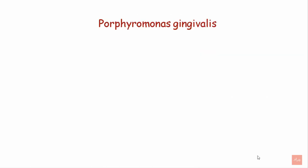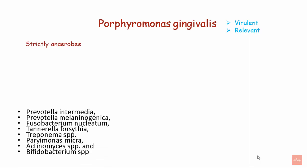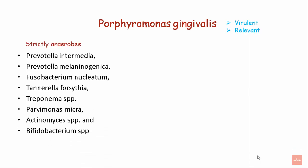Porphyromonas gingivalis is the most virulent and most relevant microorganism associated with the development of periodontal abscess. It is a strict anaerobe and may be associated with other microorganisms like Prevotella intermedia, Prevotella melanogenica, Fusobacterium nucleatum, and Tannerella forsythia.